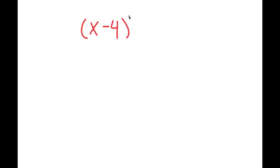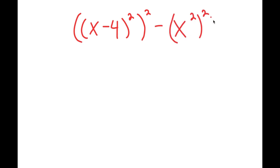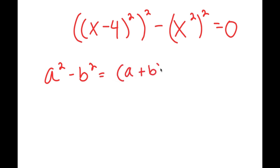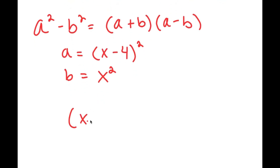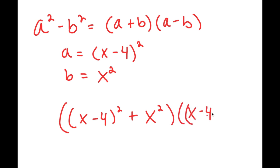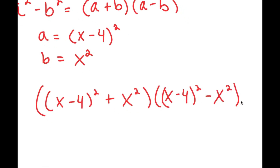Now from here, this becomes (x minus 4) squared, all to the power of 2, minus x squared to the power of 2, is equal to 0 — because I subtracted x squared to the power of 2 on both sides. Now I can use the difference of squares property: a squared minus b squared equals (a plus b)(a minus b). In this case, a is (x minus 4) squared and b is x squared. So this turns into [(x minus 4) squared plus x squared] times [(x minus 4) squared minus x squared] equals 0.